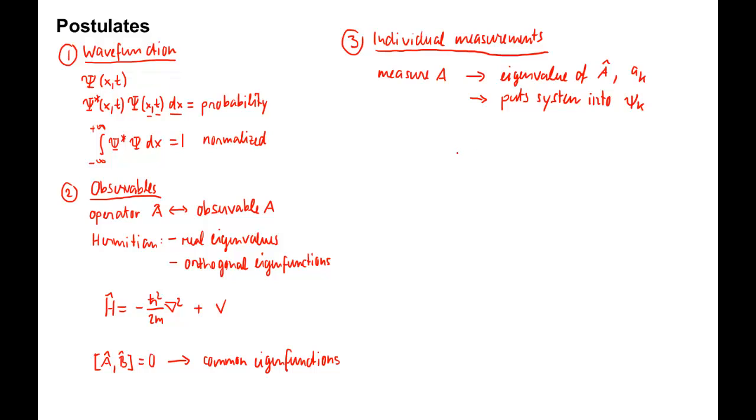The probability of getting a certain eigenvalue as outcome is given by the norm square of the expansion coefficient of the corresponding eigenfunction.